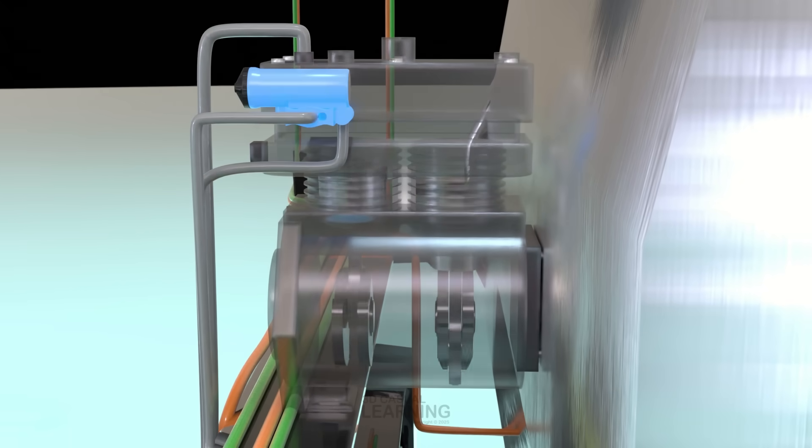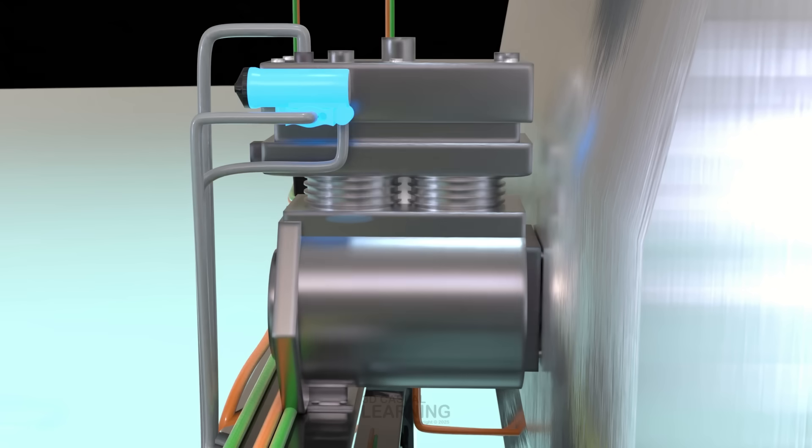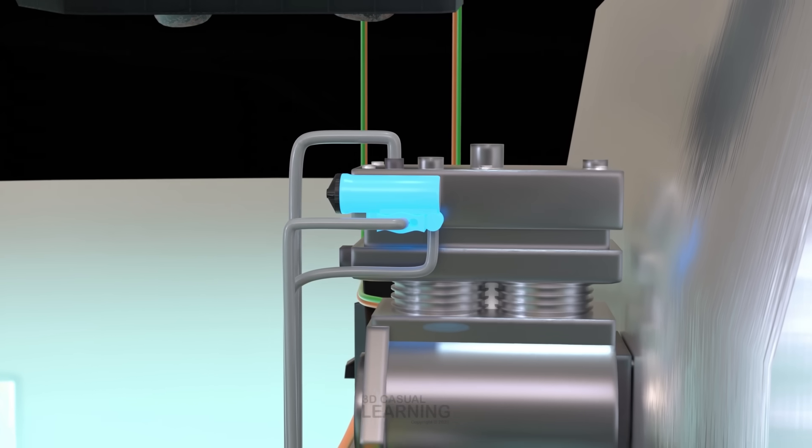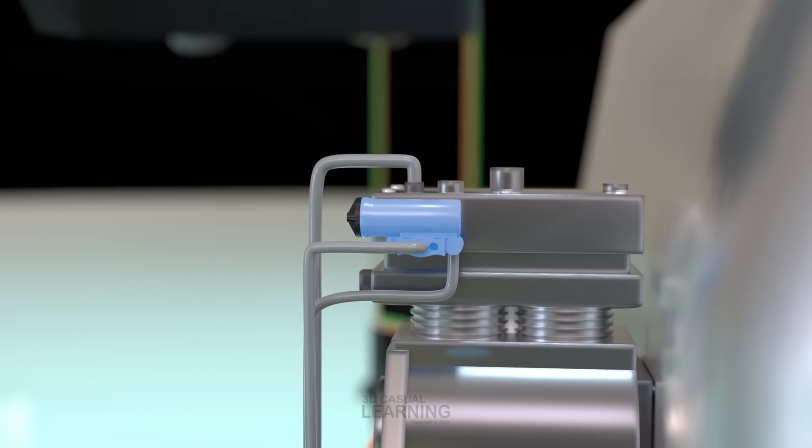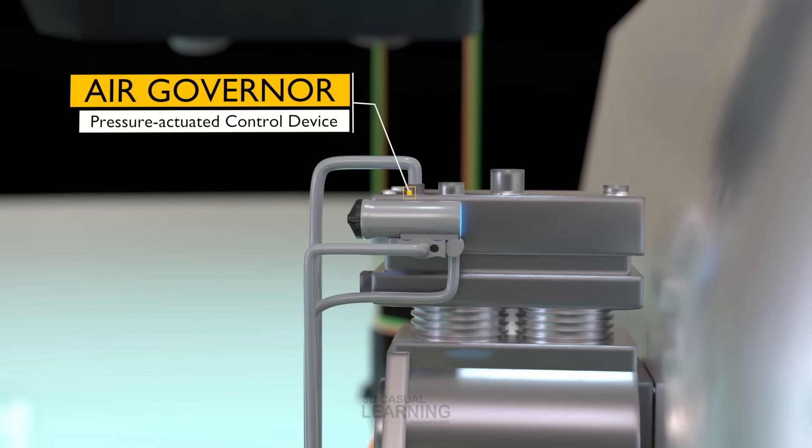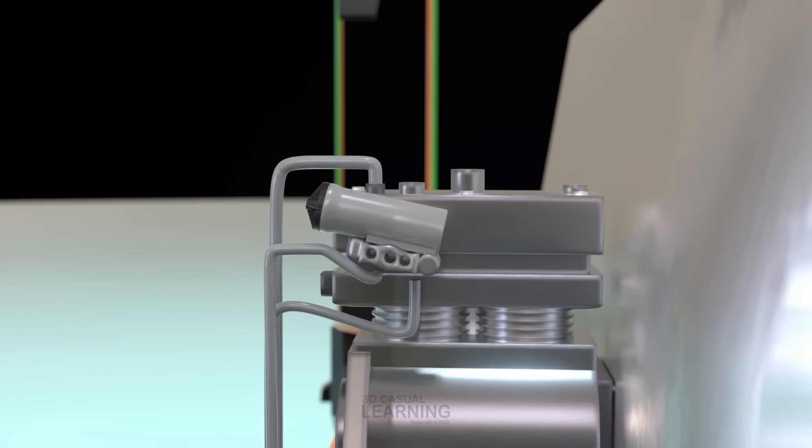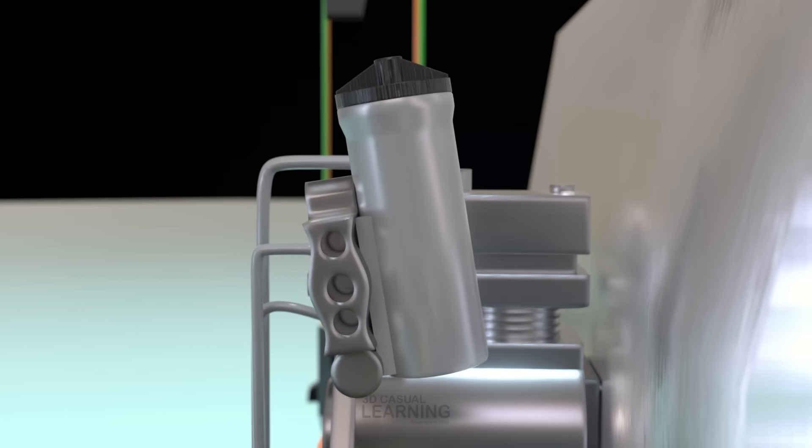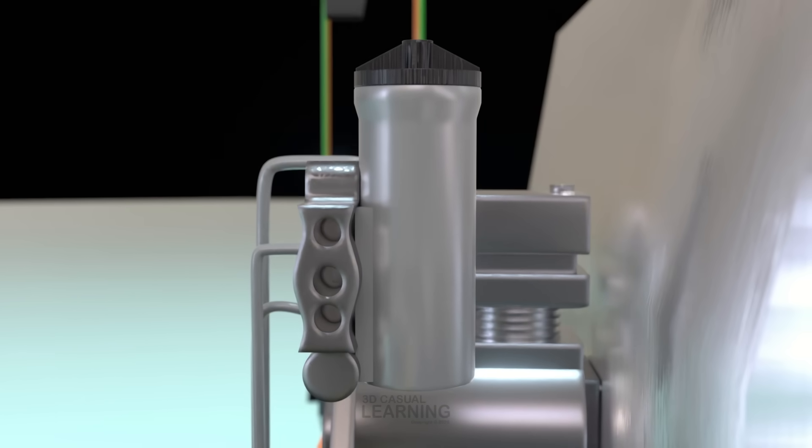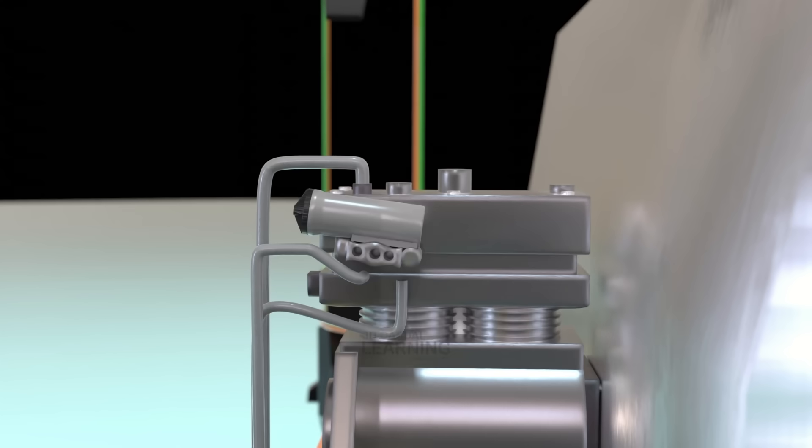However, if the compressor operates continuously, what mechanism prevents the system from exceeding safe pressure limits? This is controlled by the air governor. A pressure-actuated control device that continuously monitors the pressure within the reservoir tanks and regulates the compressor's cut-in and cut-out cycles accordingly.